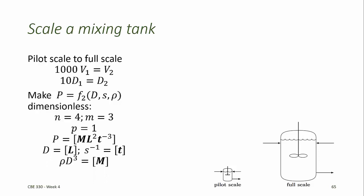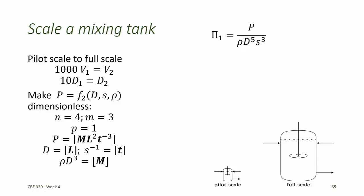Power has dimensions of mass·length² per time³, diameter has dimensions of length, and the mixing rate has dimensions of reciprocal time. We choose as our basis set D, S, and rho. D gives us a length, reciprocal S gives us a time, and to get the mass dimension we take rho times D cubed. We then de-dimensionalize the power using these quantities for length, time, and mass. So the dimensionless power number must be P divided by rho · D^5 · S^3.